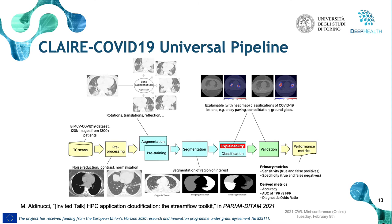The last use case I would like to discuss is the CLAIRE COVID-19 universal pipeline, designed by the CLAIRE Confederation Task Force on AI and COVID-19. The goal of this pipeline is to take different state-of-the-art AI models from the literature and compare their capabilities in the diagnosis of COVID-19 disease by analyzing pulmonary computed tomography scans of patients. This is important to provide a performance baseline for researchers in the field, measuring the progress of AI in COVID-19 diagnosis and comparing different state-of-the-art solutions.